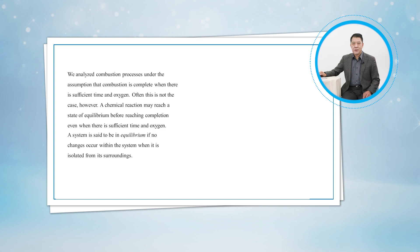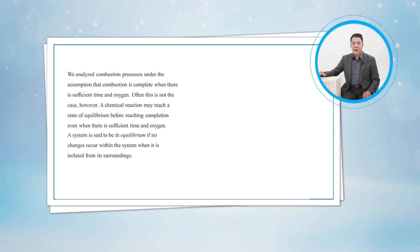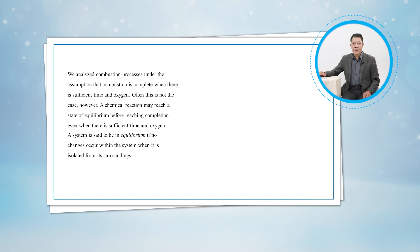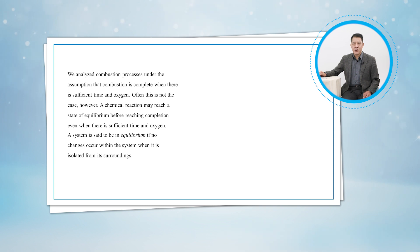A system is said to be in equilibrium if no changes occur within the system when it is isolated from its surroundings. An isolated system is in mechanical equilibrium if no changes occur in pressure; in thermal equilibrium if no changes occur in temperature; in phase equilibrium if no transformations occur from one phase to another; and in chemical equilibrium if no changes occur in the chemical composition of the system.